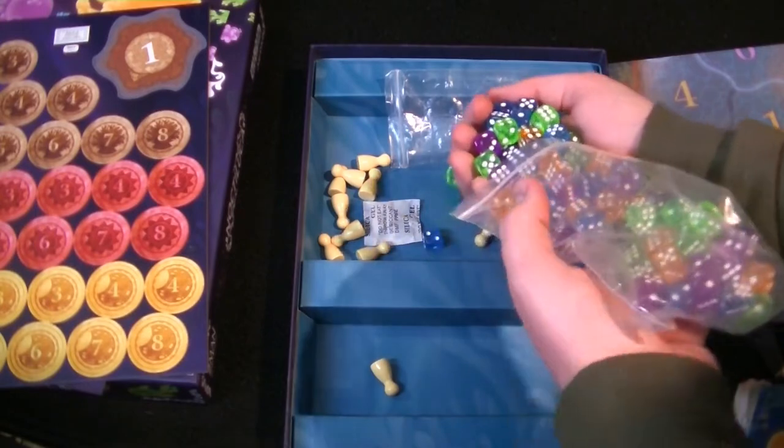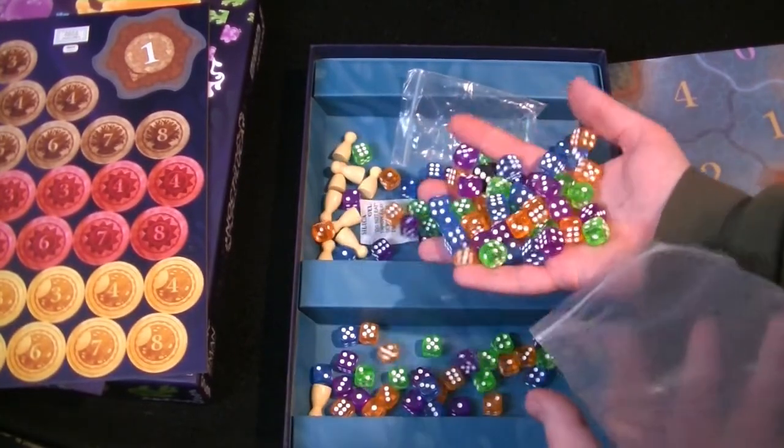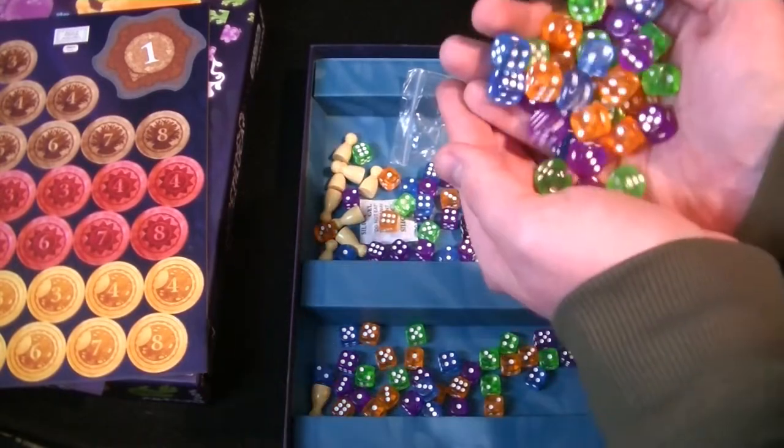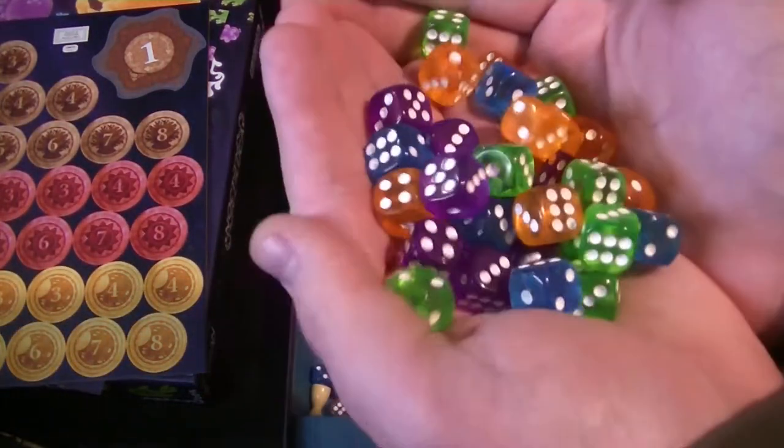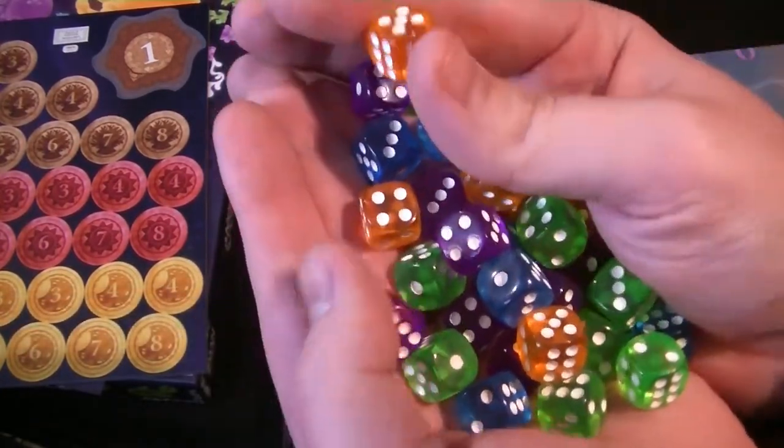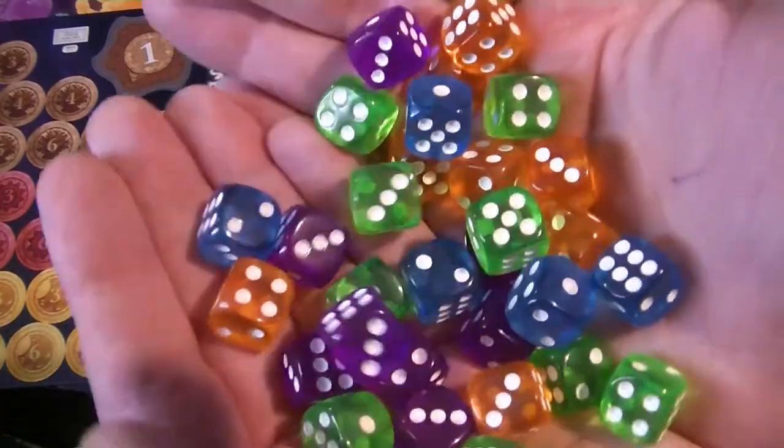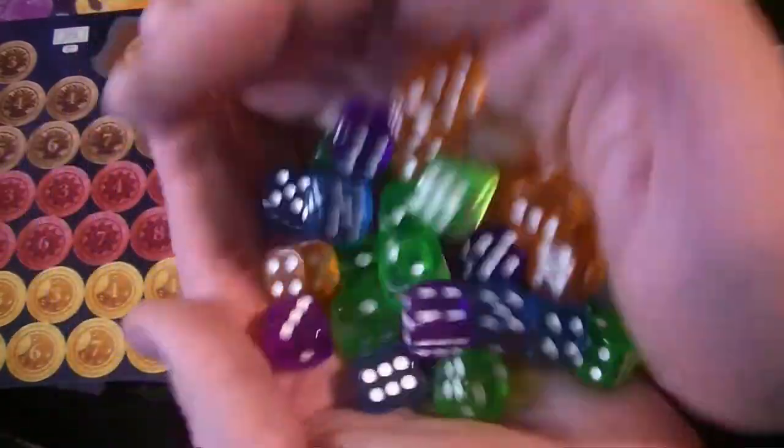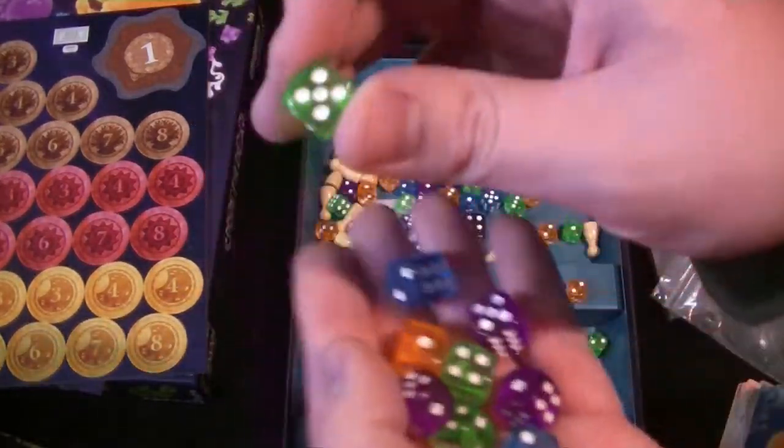Speaking of dice, quite a few of them in this game. We have blue, orange, though this is yellow but it's actually kind of orange, green, and purple. I like these colors.